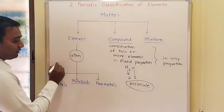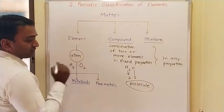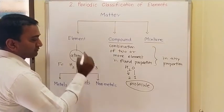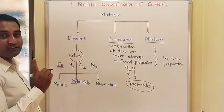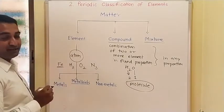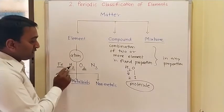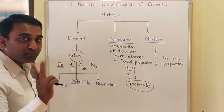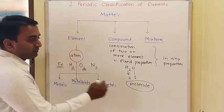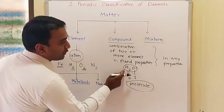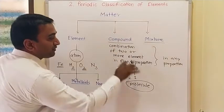Consider iron — it is monoatomic, having only one atom. Hydrogen and oxygen are diatomic elements. Hydrogen is made up of two hydrogen atoms, so H₂ is a molecule of the element hydrogen. H₂O is a molecule of a compound. So elements also have molecules, and compounds also have molecules.